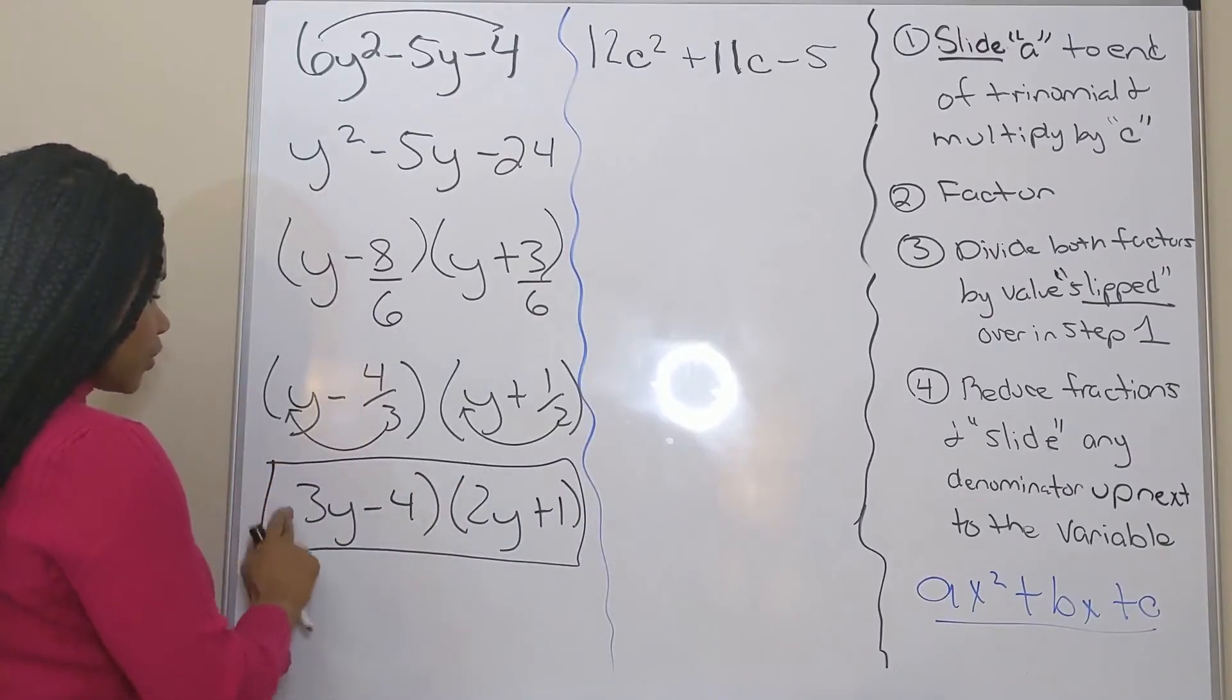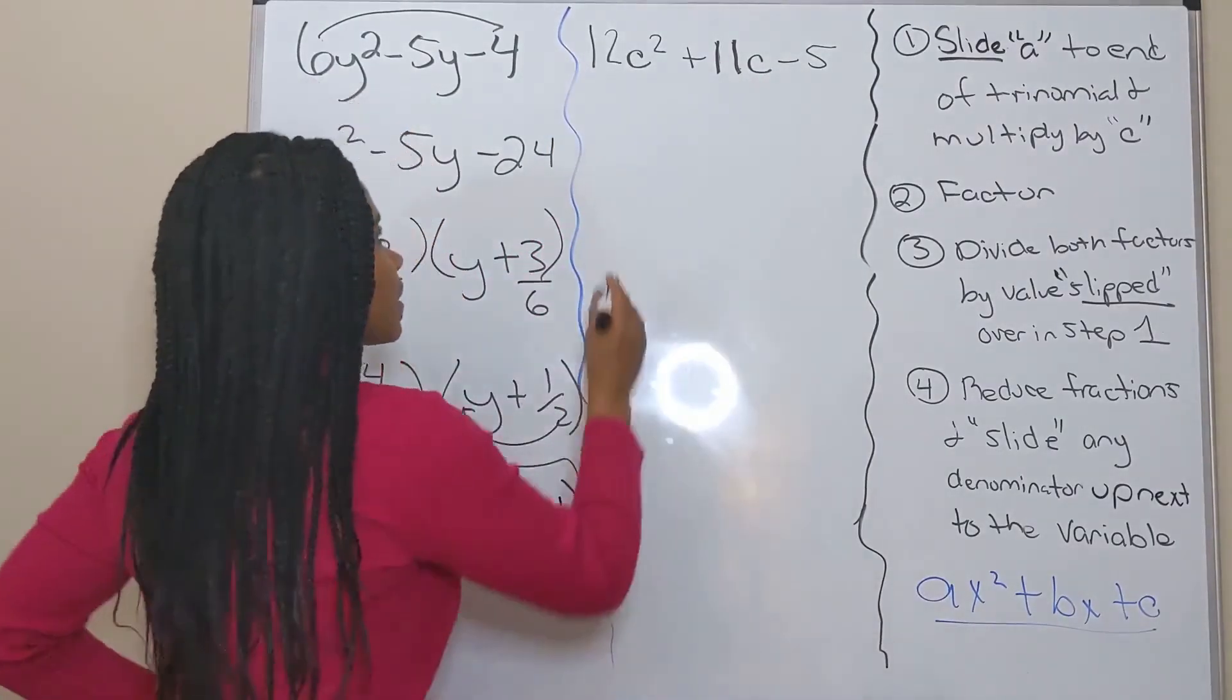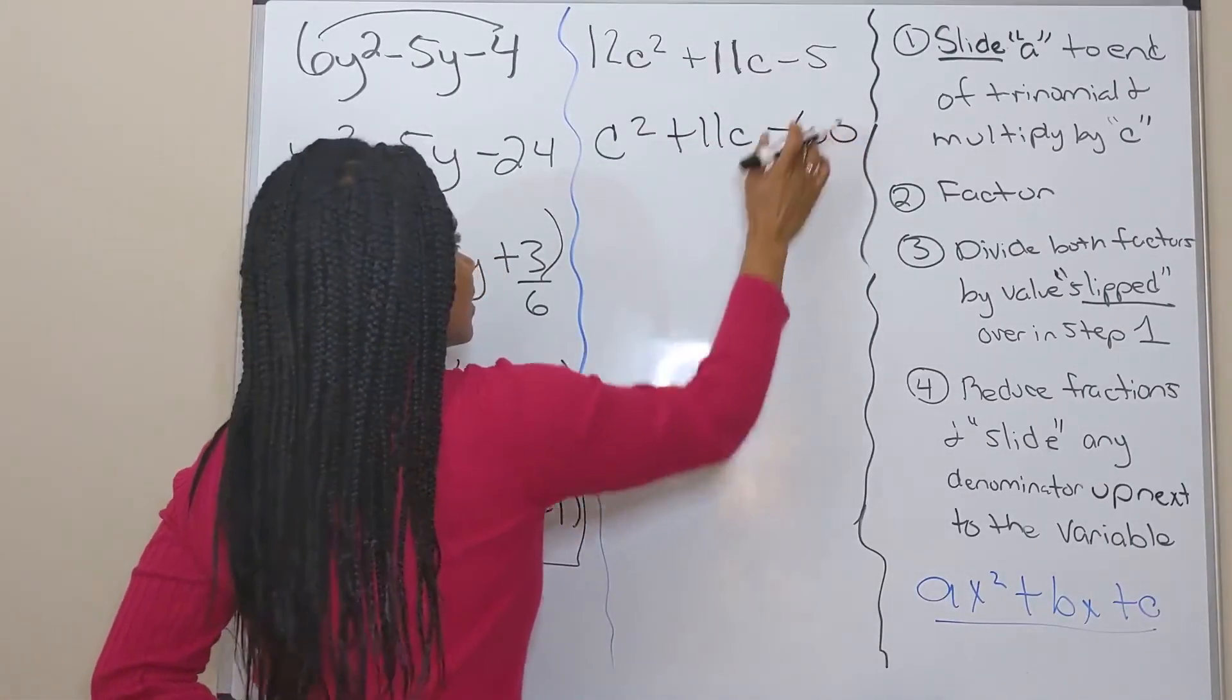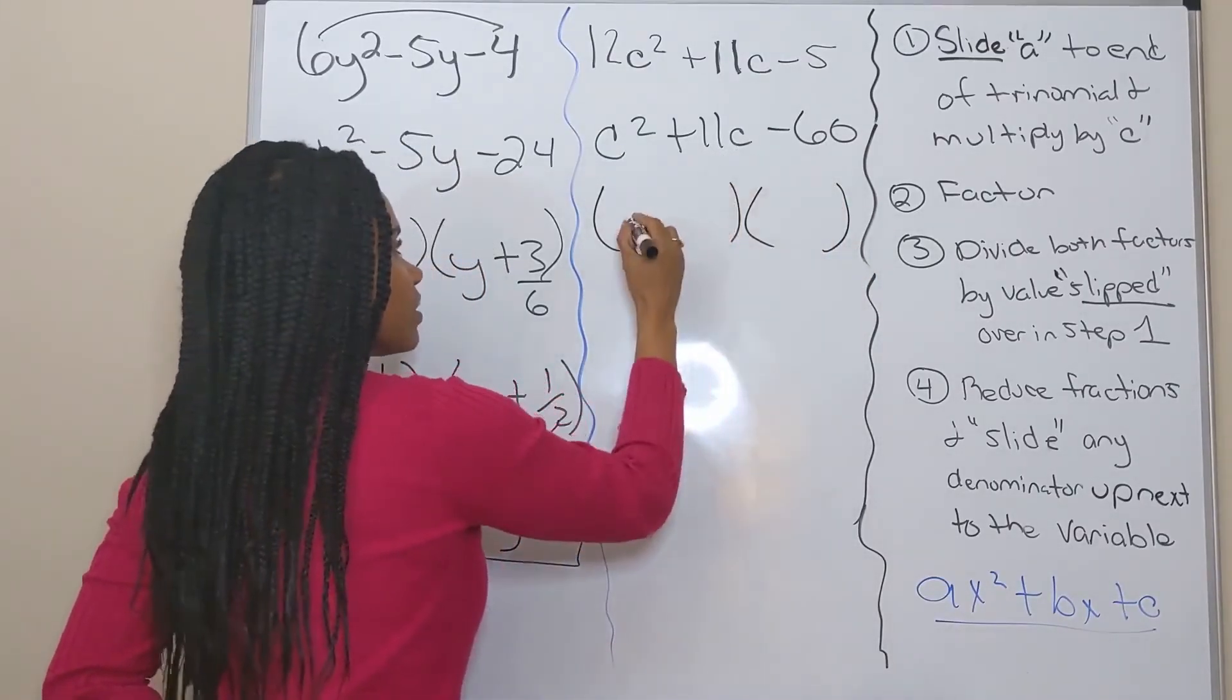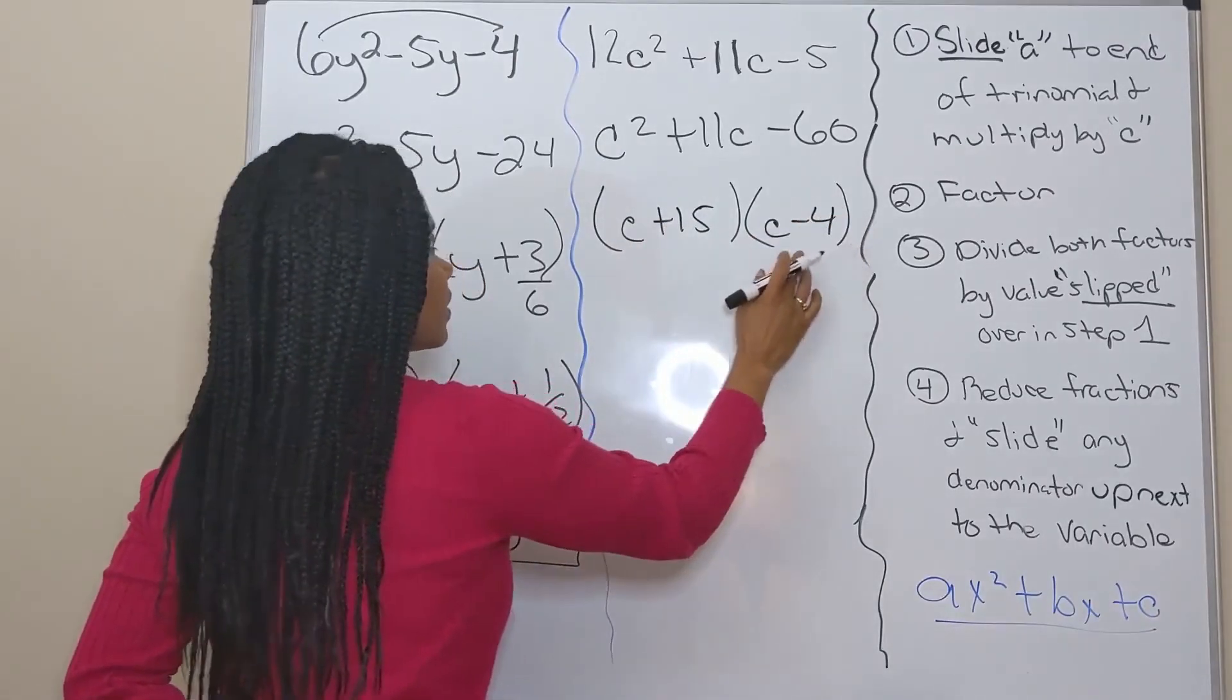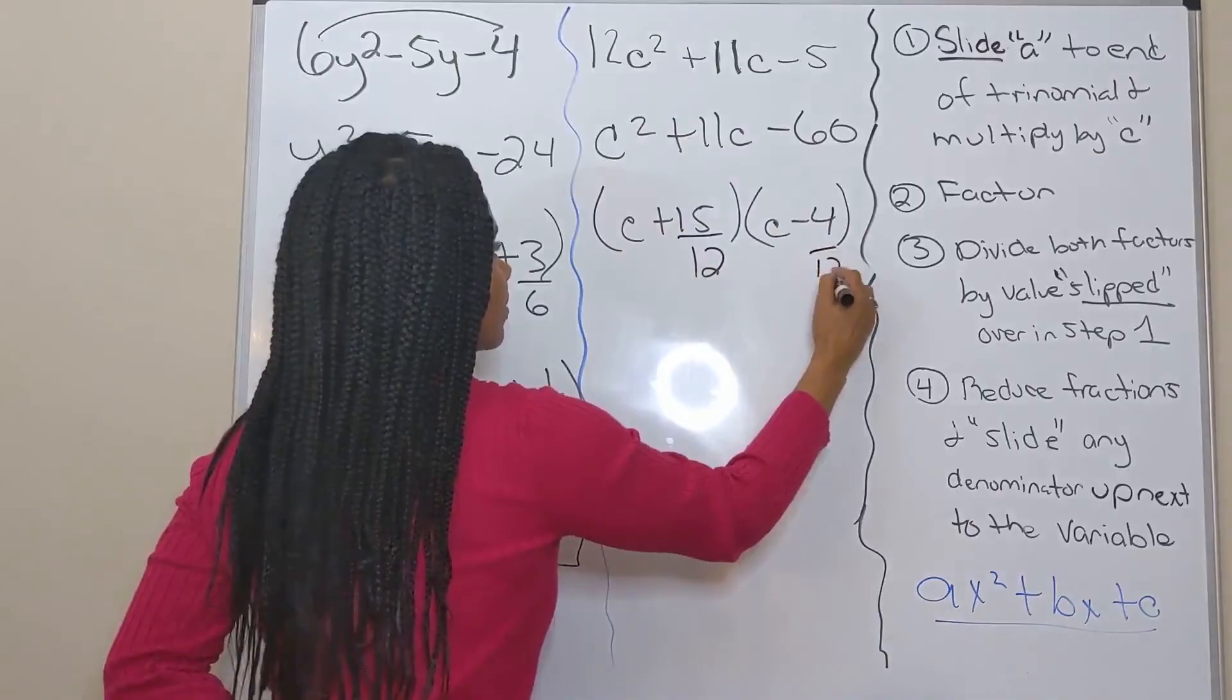Let's try one more. All right, slide 12 over to negative five and multiply. So that's c squared plus 11c minus 60. All right, factor. Factors of negative 60 that have a sum of 11 are positive 15 and negative 4. All right, dividing by what I slid from step one, dividing by 12.